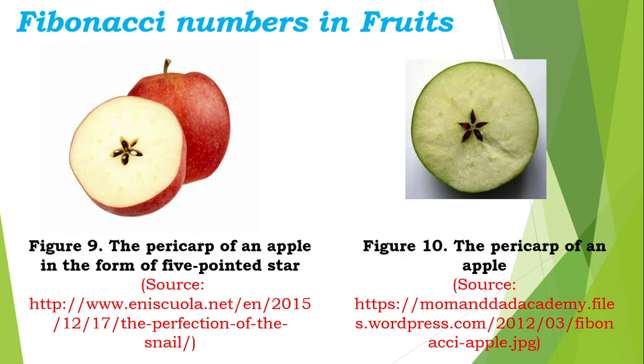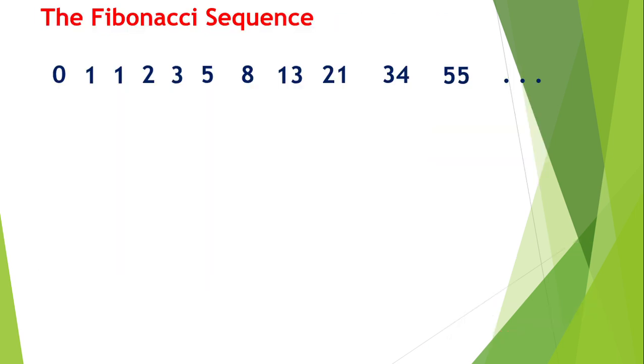These are the sequence of Fibonacci: zero plus one is one, one plus one is two, one plus two is three, two plus three is five, three plus five is eight. Remember you're going to add the previous two terms: zero plus one is one, one plus one is two, one plus two is three.